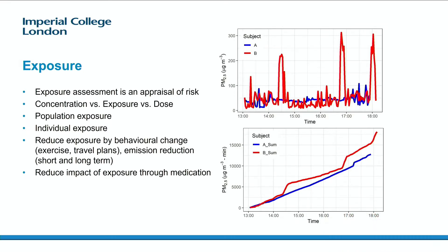You can also measure individual exposure. Here's some recent measurements we made on people working in the London Underground. One of the staff works at the gate line and then goes down into the London Underground to look on platforms and make sure everything's okay. You can see those in red — as they move around, they're exposed to more and more, and they do three of those trips a day. The one in blue is just sitting in an office most of the day. You can integrate that exposure to add it all up, and subject B, who's moving around within the environment, is exposed to higher concentrations — overall, more PM2.5.